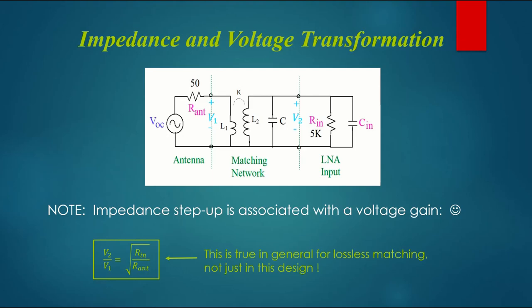There's a very important thing about matching networks: whenever you have an impedance transformation, you also have a voltage transformation. That can be shown from power conservation. The voltage ratio V2 over V1 is the square root of the impedance ratio. This is generally true of any matching network, not just transformers.